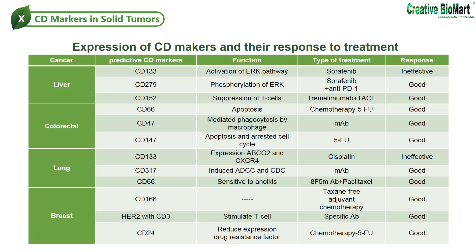EZH2 has methyltransferase activity, and through the methylation of histone H3, suppresses the expression of tumor suppressor genes and CD markers. There are many microRNAs suppressing the expression of CD markers on tumor cells, which in fact play the role of tumor suppressors by binding the 3' UTR of CD marker mRNAs and preventing their expression. However, in methylated tumor cells, binding of inhibitory factors to the promoter regions of these microRNAs reduces their expression and in turn increases the expression of CD markers. Therefore, the CD markers expressed on tumor cells could be used as diagnostic and prognostic factors and might also detect the signaling pathways in activating the tumor suppressors.